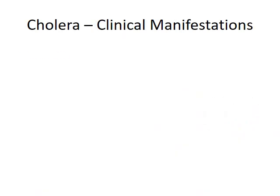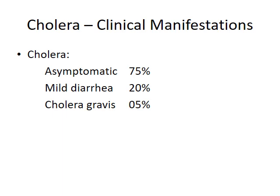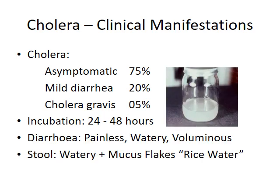Clinical manifestations of cholera range from asymptomatic to severe and fatal disease. About 75% of infected persons are asymptomatic, 20% develop mild diarrhea, and 5% progress to cholera gravis — a severe and potentially fatal complication. The incubation period is short, 24 to 48 hours. The diarrhea in cholera is painless, watery, and voluminous. The stool contains mucus flecks, giving it the typical rice-water appearance.